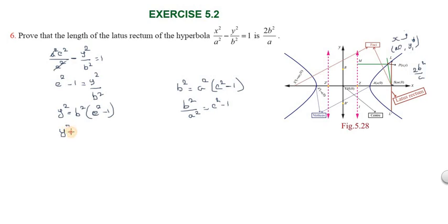From b²/a² = e² - 1, we substitute back: y² = b² × b²/a². Simplifying: y² = b⁴/a². So y² equals b to the power 4 divided by a².